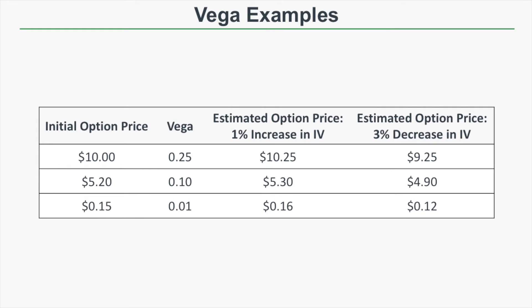Now consider a 15-cent option with a vega of 0.01. A 1% increase in implied volatility means that 15-cent option is now worth 16 cents. On the other hand, if implied volatility fell by 3%, that option loses its vega value times 3 — so 15 cents minus 1 cent times 3 gives us a 12-cent option. In other words, vega is how much an option's price is expected to increase with a 1% rise or decrease with a 1% drop in implied volatility.